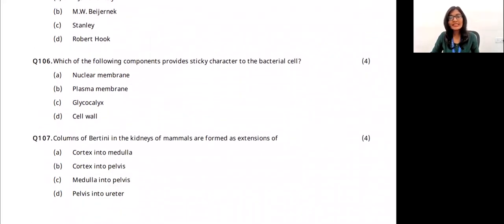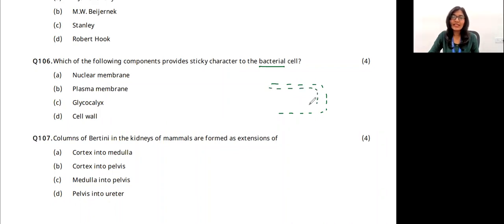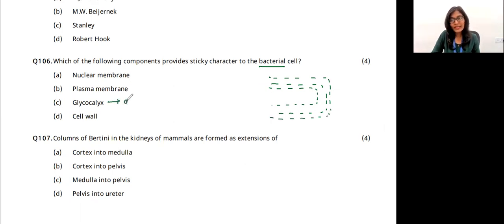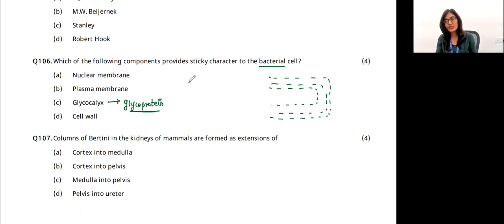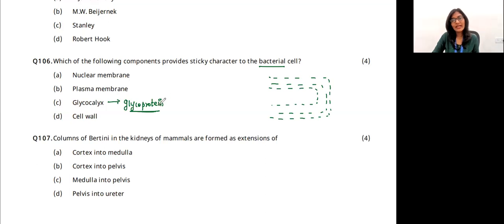Question 11: which component provides sticky character to bacteria? Bacteria have a cell wall, cell membrane, and glycocalyx. Glycocalyx is made of glycoproteins — carbohydrates combined with proteins — and gives bacteria their sticky characteristics. The answer is option C.